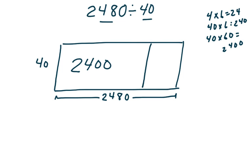So our first partial quotient is 60, because 40 times 60 is 2,400. So we're going to subtract 2,400 from the dividend.